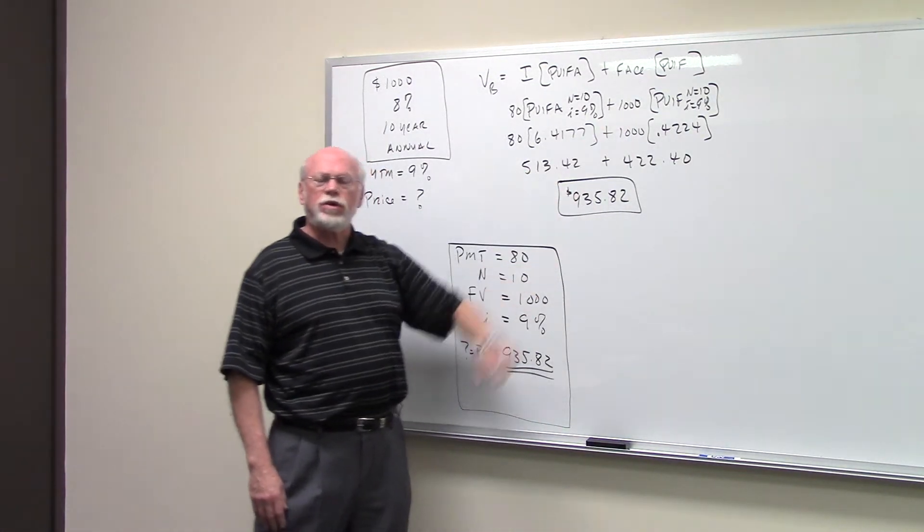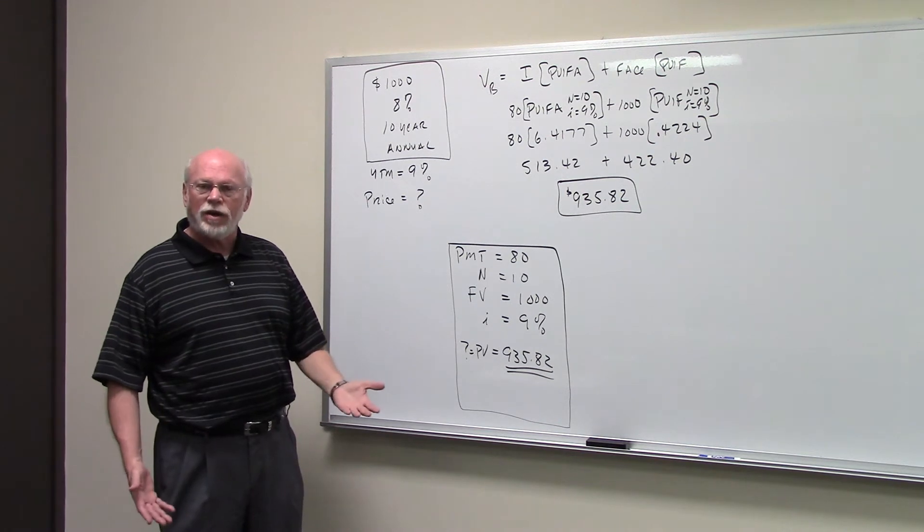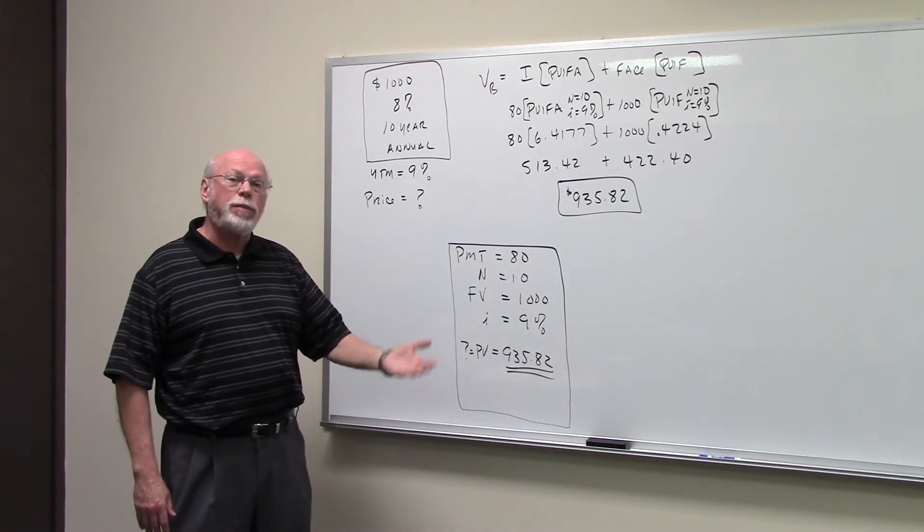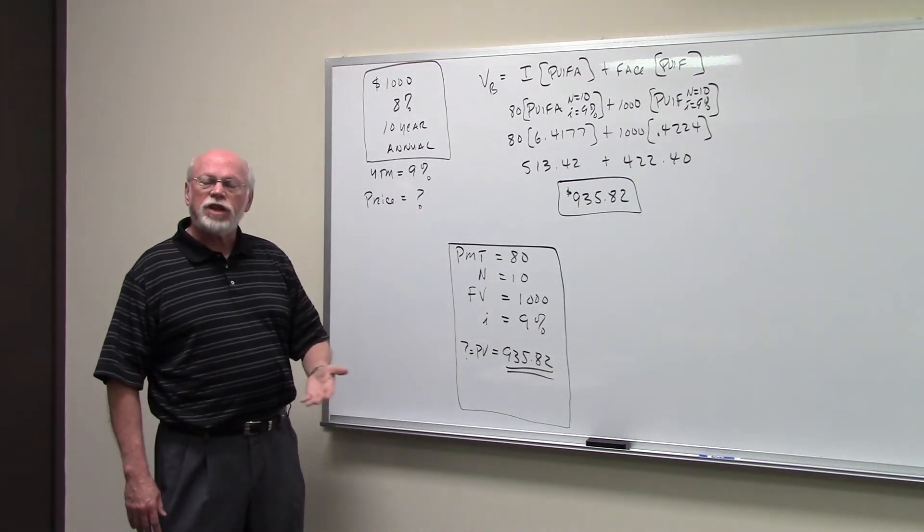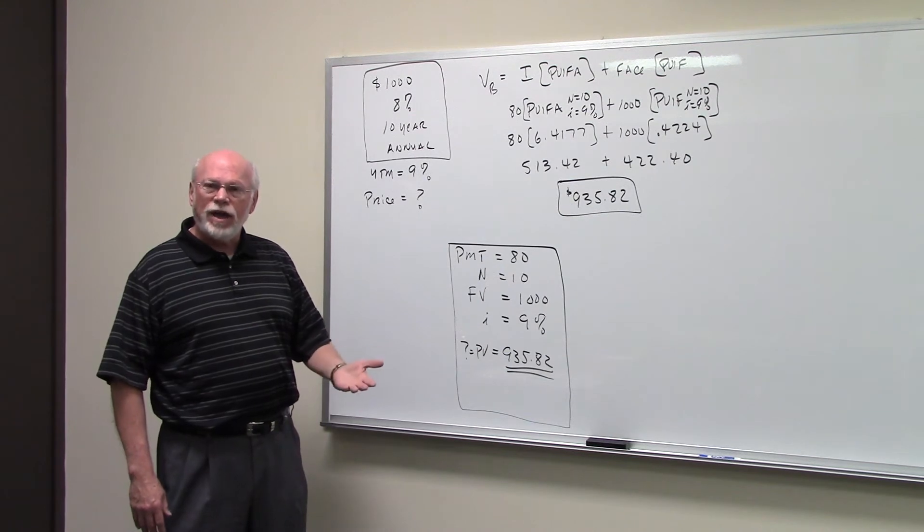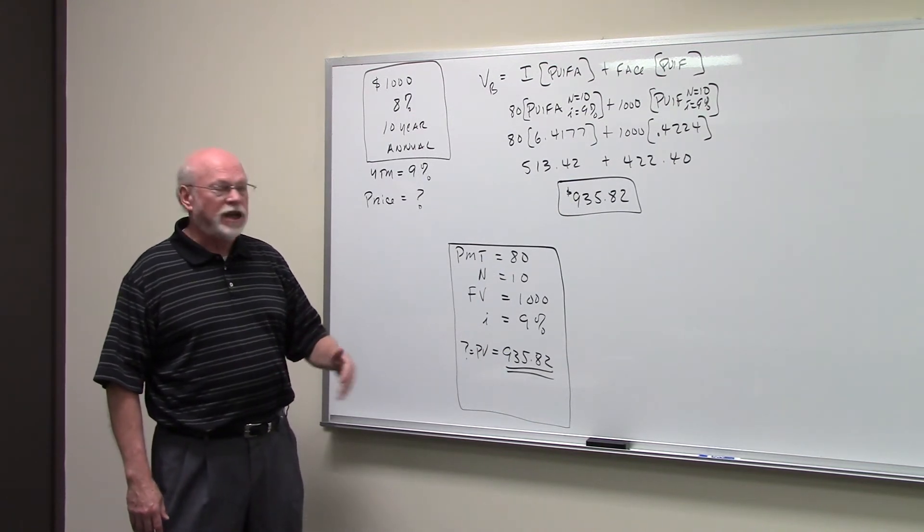The other cash flow is the face value of the bond. This bond's face value is $1,000. That's a lump sum cash flow that you'll get at the end of the life of the bond. $1,000 times your PVIF, N equal to 10, I equal to 9%. That's going to give you the value of the lump sum cash flow.